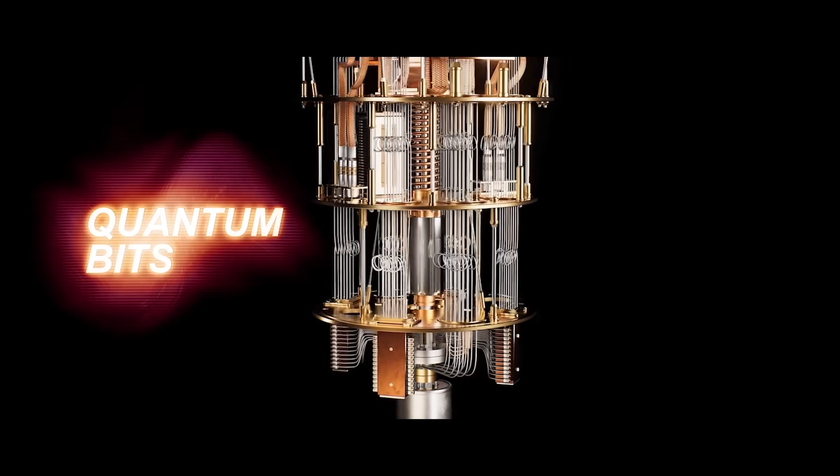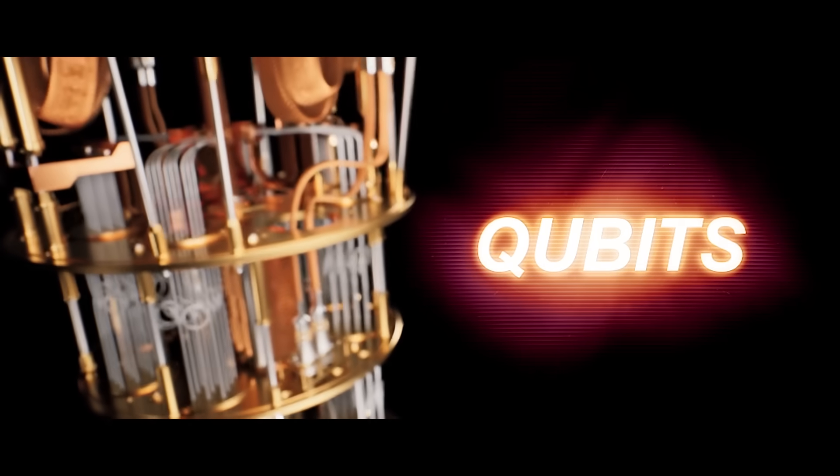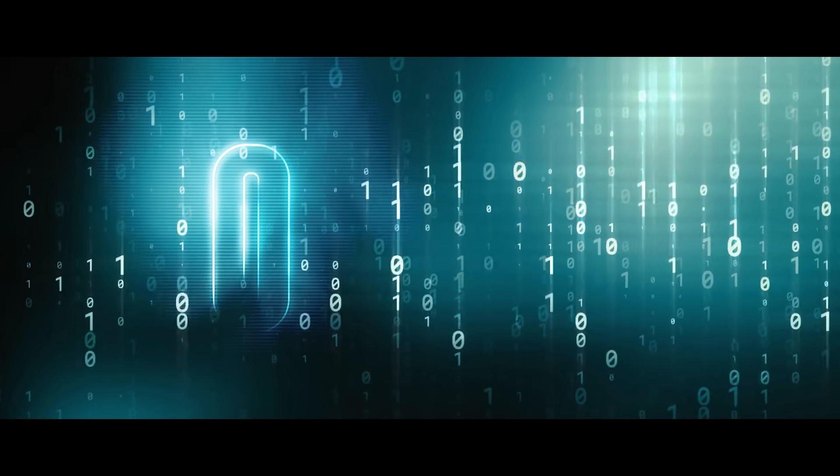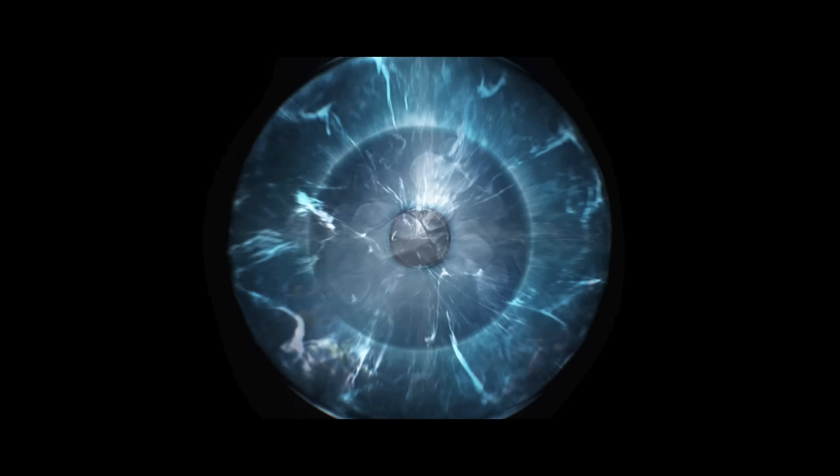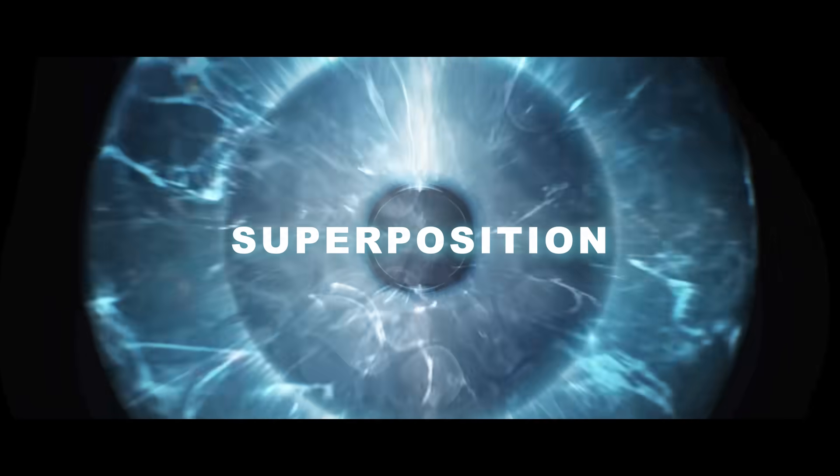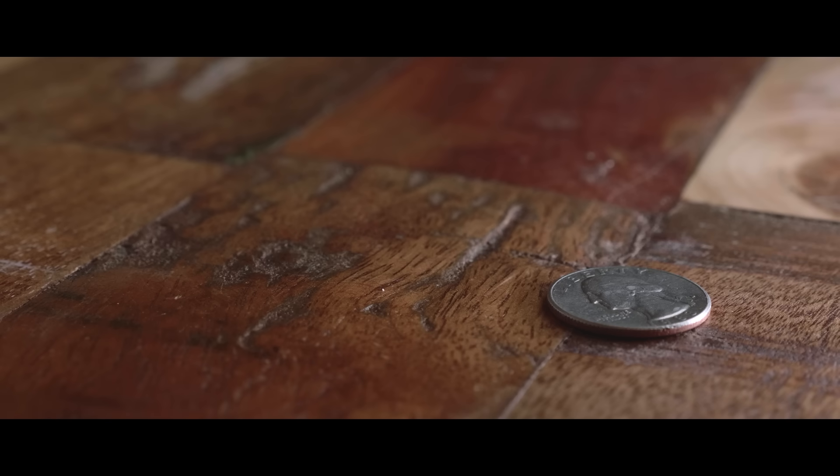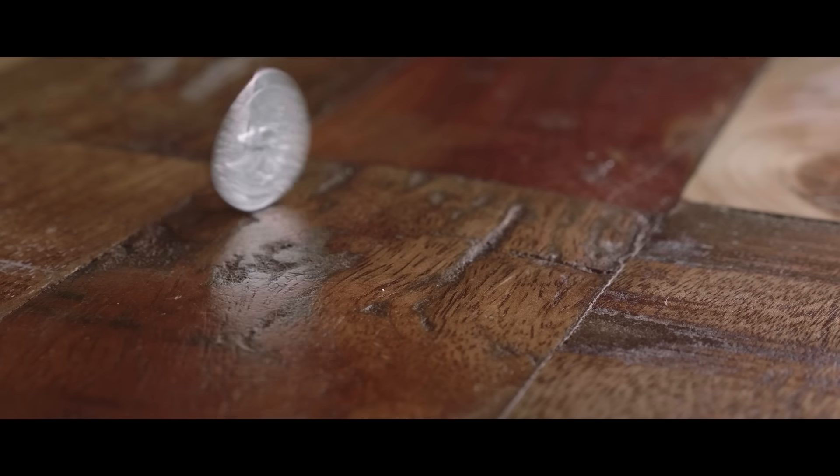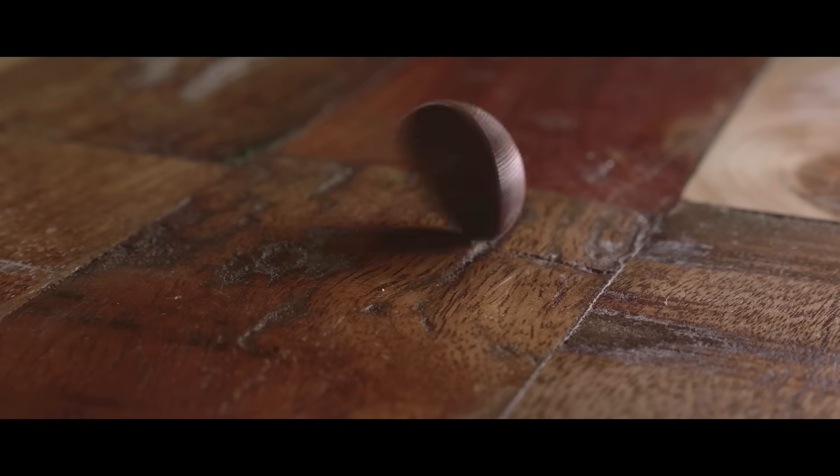So the first thing to know is that qubits are the fundamental building blocks of a quantum computer. Classical computer bits are binary, either zero or one. Qubits can exist in multiple states, thanks to a principle called superposition. It is like a spinning coin. While a normal computer bit is the coin lying flat, showing either heads or tails, a qubit is the coin while it's spinning, existing in all possible states at once.